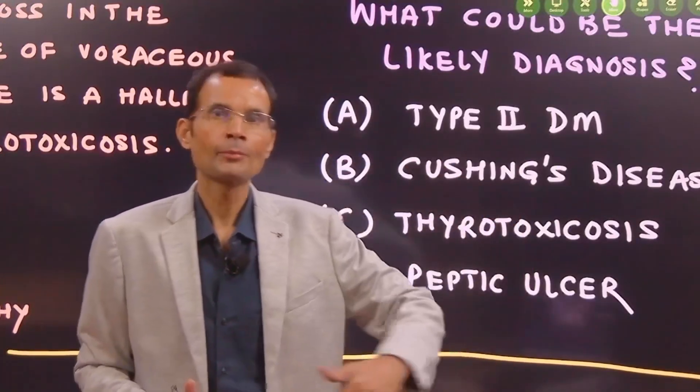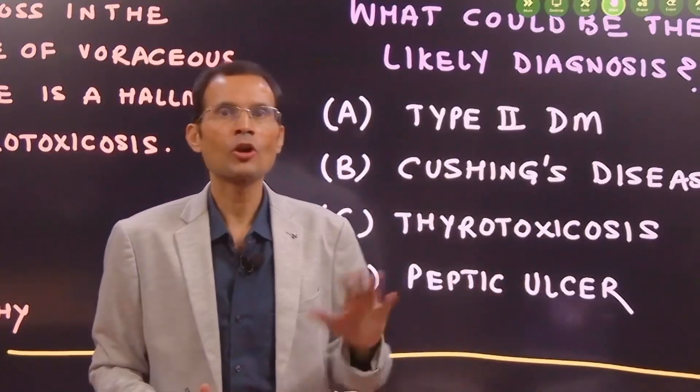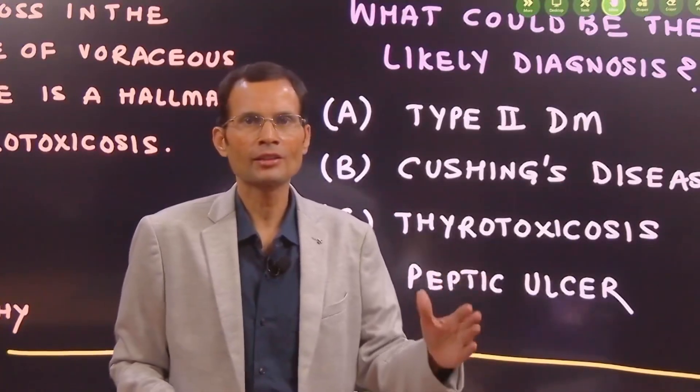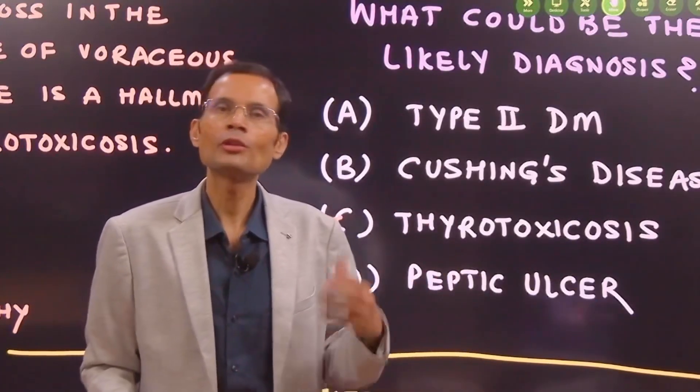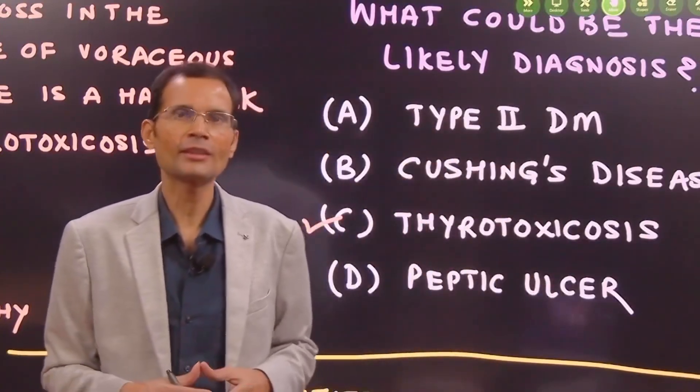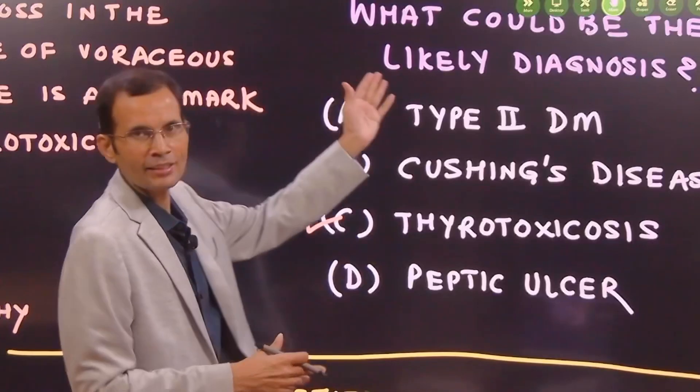But remember, diabetes is a disease of duration. That's how it is described. Particularly for first prof students, diabetes is a disease of duration. Longer the duration, more likely are the complications. So, the neuropathy, retinopathy, nephropathy, all these complications are possible only with or are observed only with a longer duration of the disease. And that's not the case here.